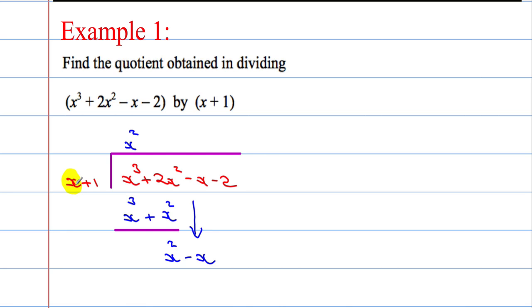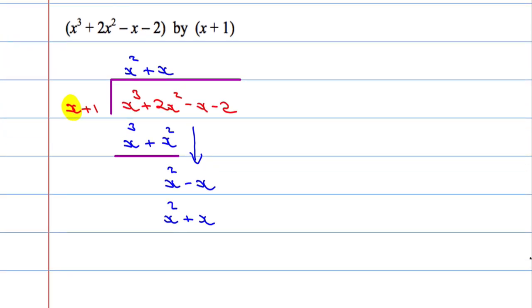And we repeat: x goes into x squared x times. We take this x and multiply by this expression here — x times x is x squared, and x times 1 is x. Draw a line underneath.